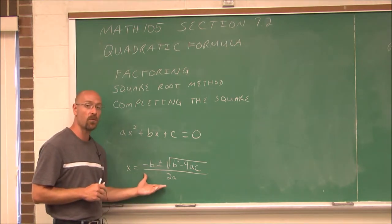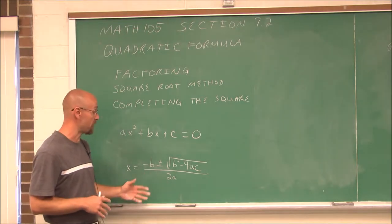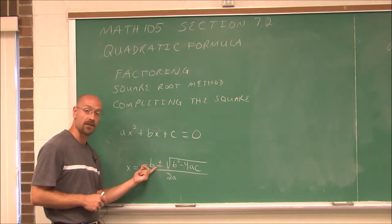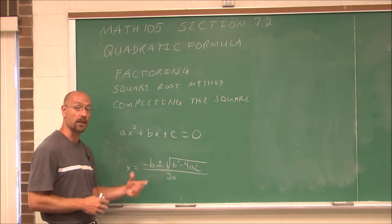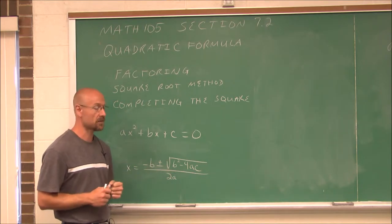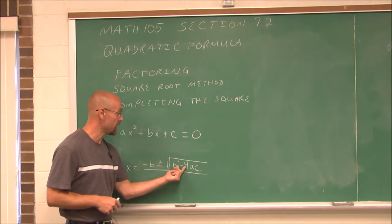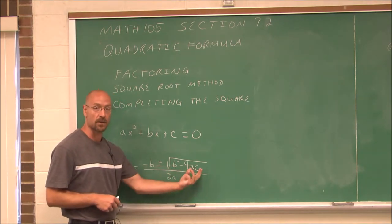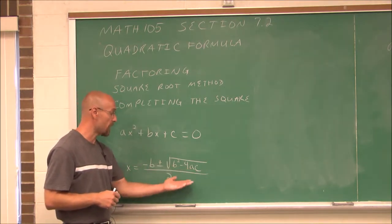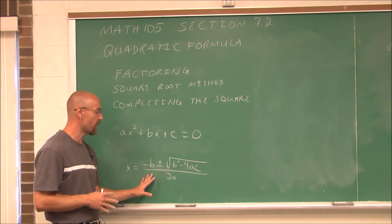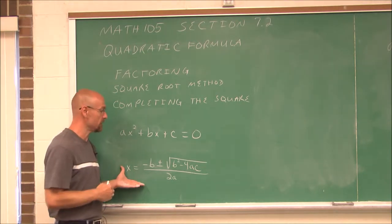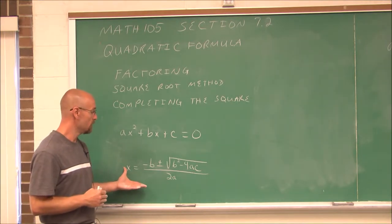The problem with the quadratic formula is that so many times we make sign errors. When we look at the formula, we have negative b — so we have to change the sign of that coefficient. Then we have plus or minus a quantity. There's also negative 4 times a times c, and if a or c is negative, we have the opportunity to make sign errors when multiplying negatives. Lots of opportunities for sign errors — that's why I recommend this as a last resort.